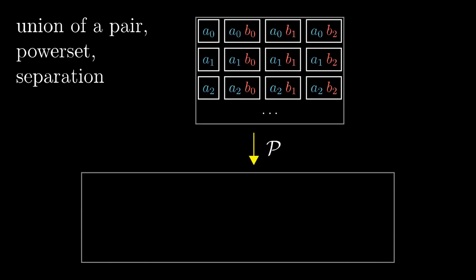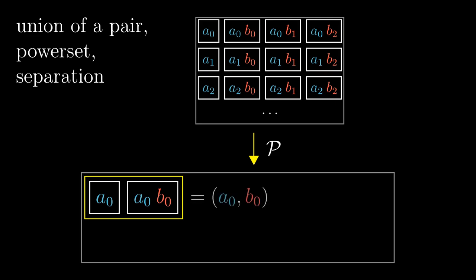Among other things, it contains all the two element subsets of the previous power set. For example, this one which is by Kuratovsky's definition equal to the ordered pair A0, B0.